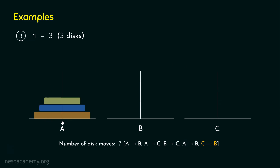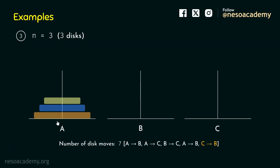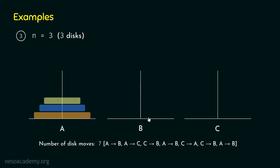We can shift the two remaining discs from tower C to tower B using A as the intermediate: shift the yellow disc from C to A, shift the blue disc from C to B, then shift the yellow disc from A to B. The total number of moves is clearly seven. So for n equal to three, there are seven moves.